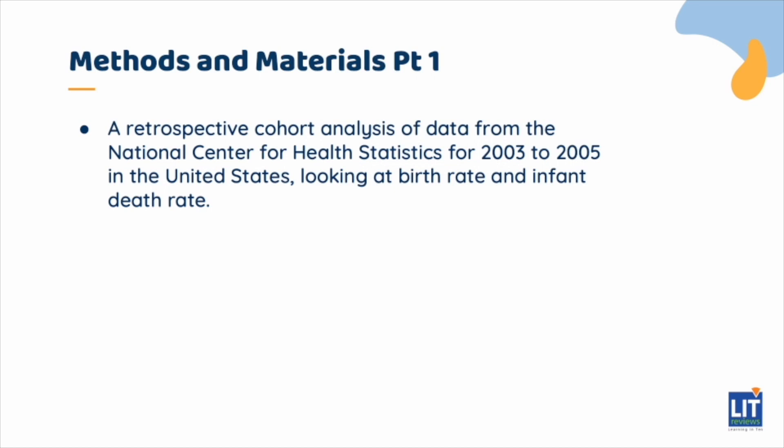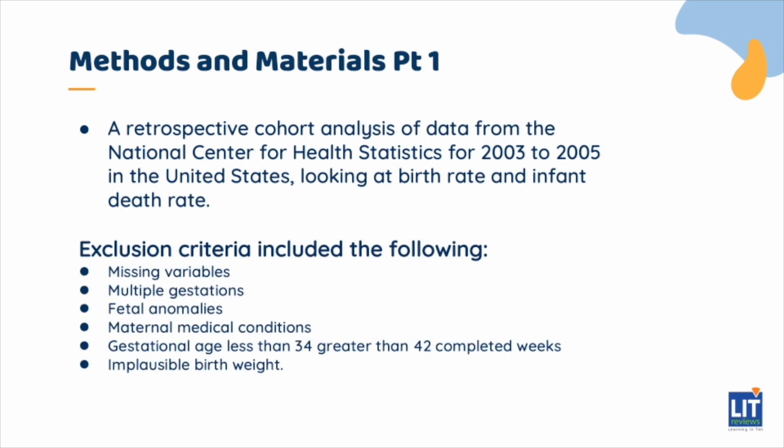This is a retrospective cohort analysis of data from the National Center for Health Statistics for 2003 to 2005 in the United States, looking at birth rate and infant death rate. Exclusion criteria included the following: missing variables, multiple gestations, fetal anomalies, gestational age less than 34 and greater than 42 completed weeks, and implausible birth weight.